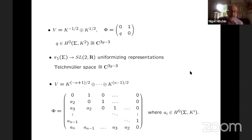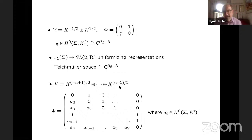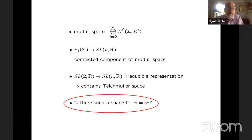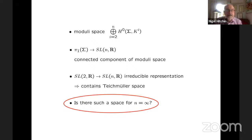If you go from SL(2,ℝ) to SL(N,ℝ), then it turns out you can do exactly the same sort of thing. But now you take a direct sum of line bundles — a larger direct sum — beginning with the negative power of the canonical bundle and going up to the corresponding positive power. And the Higgs field looks like this, where the A₂s are quadratic differentials, A₃s are cubic differentials, and so on and so forth. This Higgs field is symmetric about an anti-diagonal. The orthogonal structure on V is really obtained by pairing the bottom with the top. This is a connected component of the moduli space of representations into SL(N,ℝ).